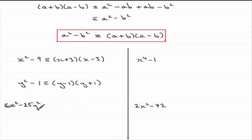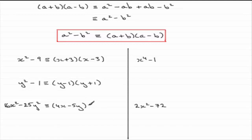In this example, I picked it just to show you that you can have numbers and letters all mixed together in the same term, but it is still the difference — the minus — between two squares. This is the square of 4x, since 4x times 4x gives 16x squared. And this is the square of 5y, since 5y times 5y is 25y squared. So we can write this as 4x minus 5y multiplied by 4x plus 5y.